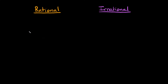In this video I'm going to teach you the difference between rational and irrational numbers. A rational number is simply an integer or a ratio of two integers. A ratio is basically just a fraction, and you can remember that because the word 'ratio' is literally in the word 'rational'.